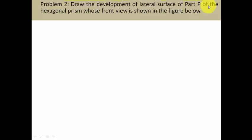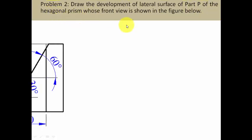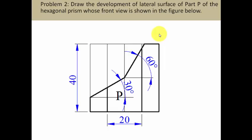Draw the development of the lateral surface of part P of the hexagonal prism whose front view is shown in the figure below. This is the front view — it is part of a question, and this is something you need to recreate in your drawing sheet, and accordingly its development has to be made. But before that, let me show you how this hexagonal prism has been kept with respect to the horizontal as well as vertical planes.